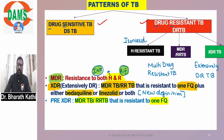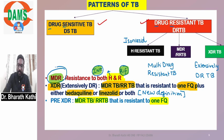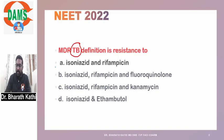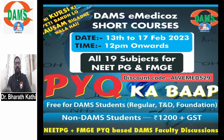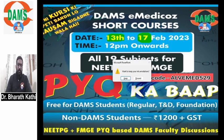These are the terminologies you should know thoroughly. As given in the recent NEET question, the answer is MDR-TB is resistance to isoniazid and rifampicin. You should also be thorough regarding definitions of XDR-TB and pre-XDR-TB. For more such discussions, catch us live on PYQKABOP, starting from 13th to 17th February.